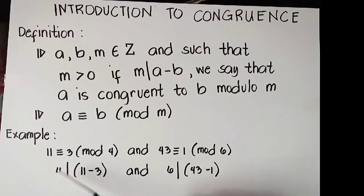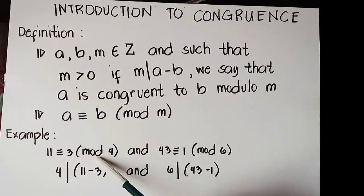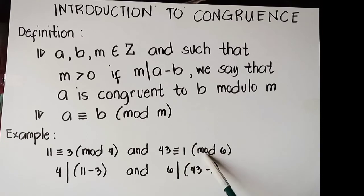Example: 11 congruence to 3 modulo 4, and 43 congruence 1 modulo 6.